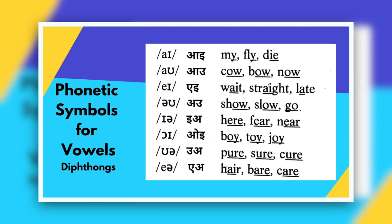The next diphthong is OI, as in boy, toy, joy. The second last is UA, as in pure, sure, cure. It may sound a little awkward because we have been saying 'pure, sure, cure,' but phonetically it is 'pure, sure, cure.' The last diphthong is AIR, as in there, bear, care — not 'there, bear, care,' but 'there, bear, care.'